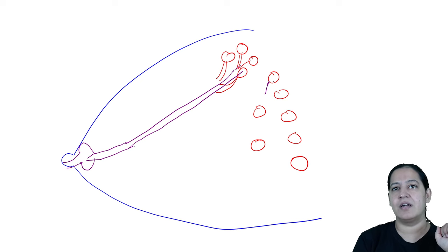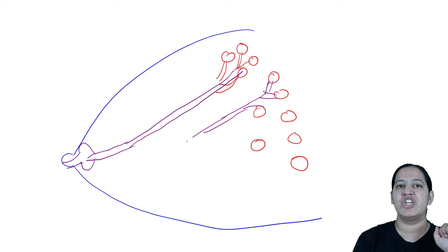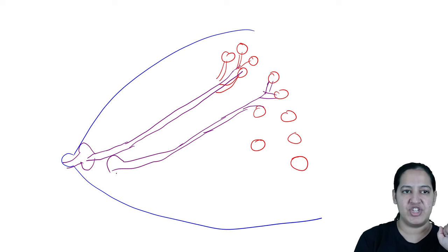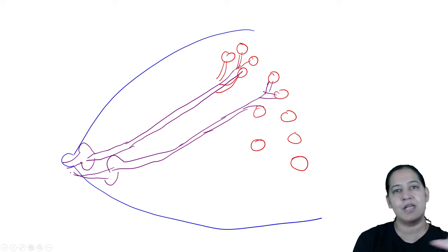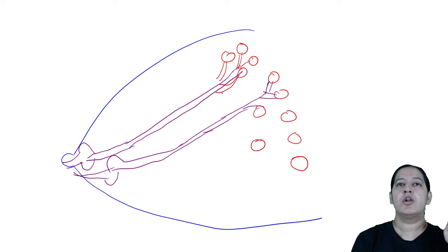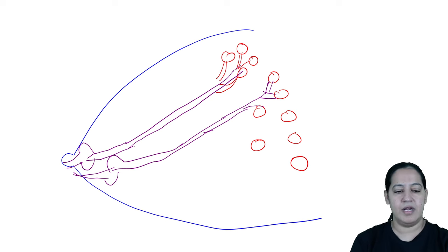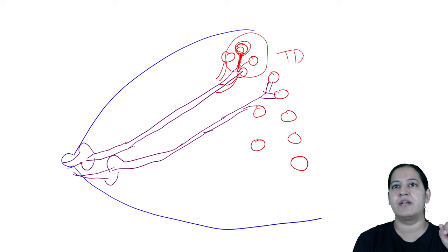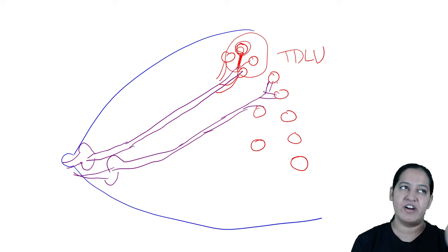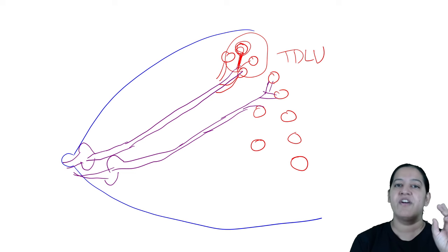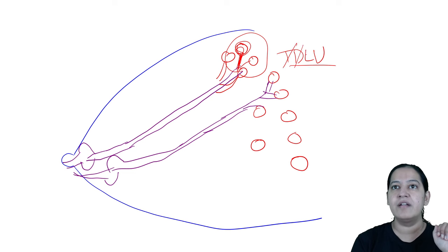Milk collects there and then opens into the nipple. So ductules or acini open into terminal ducts, terminal ducts open into lactiferous ducts, lactiferous ducts open into the nipple via the lactiferous sinus. This is the main epithelial component. When multiple ductules open into one terminal duct, this is known as TDLU — Terminal Duct Lobular Unit. TDLU is the functional unit of the breast, like the nephron is the functional unit of the kidney.